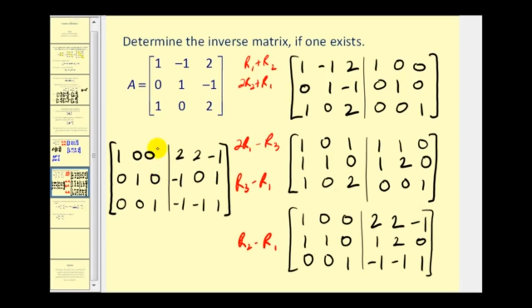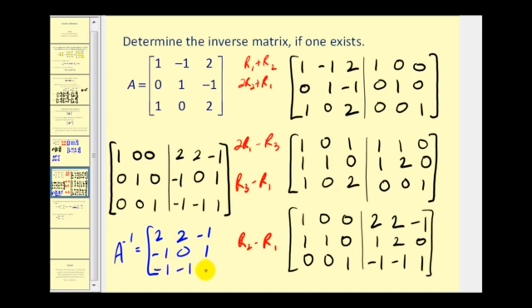The right side is now A inverse: two, two, negative one; negative one, zero, one; and negative one, negative one, one. We're a bit short on time, but you may want to go ahead and test that A times A inverse and A inverse times A both equal the identity matrix. I've already done that and it does check out.